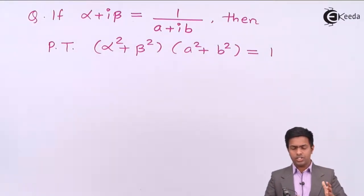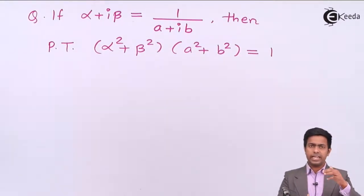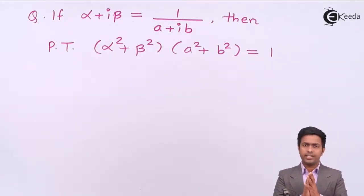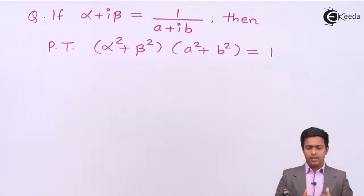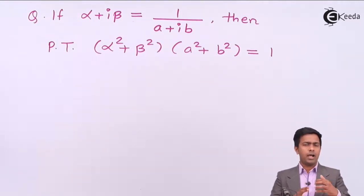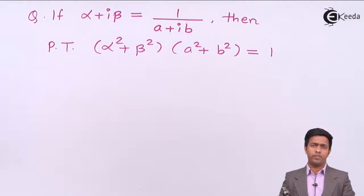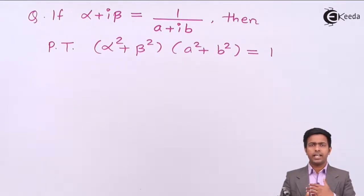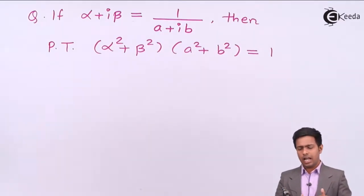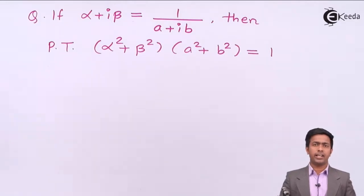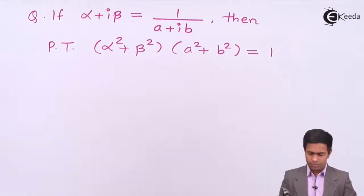So the question is how to create those square terms. It's quite simple. What I'm going to do is take the conjugate of the given number. Once I get the conjugate, I'll multiply the equations and we can get the answer very easily.